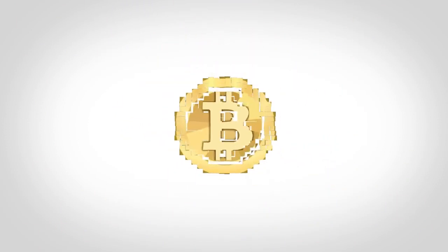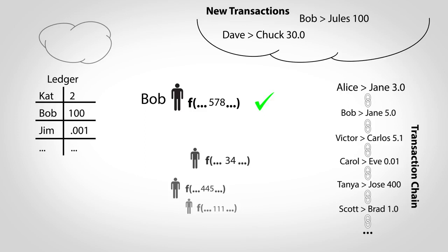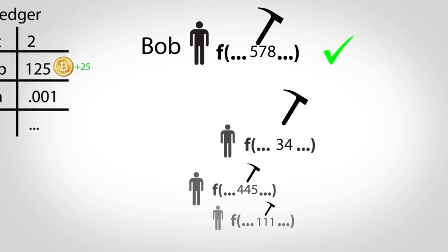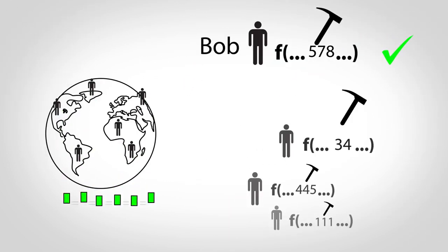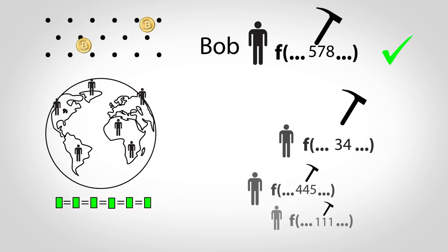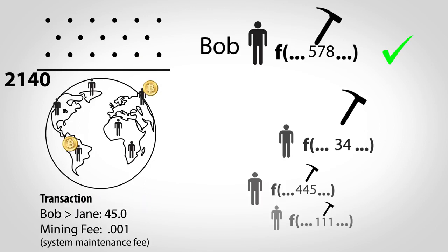Finally, how does money get created? Every time someone wins the lottery to pick the next transaction in the chain, new bitcoins are created out of thin air and awarded to their account. Solving these problems is commonly called mining, as this is how money enters the system, but the main purpose of the math is to make sure everyone's ledgers agree. The math simply provides a convenient way to randomly distribute money into the world. In fact, sometime around 2140, no more money will be created and participants will only be paid from fees added onto transactions.